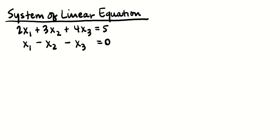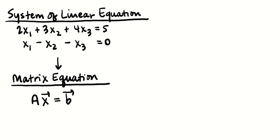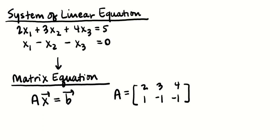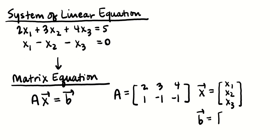I've already shown you in this class how we can transform a system of linear equations into a corresponding matrix Ax equals b, where A is the coefficient matrix — so that would be 2, 1, 3, negative 1, 4, negative 1. X is equal to the solution vector we're looking for: x1, x2, x3 — the combination that makes these equations true. And b is equal to the vector 5, 0. To solve that equation, we augment A with b, row reduce, and draw some conclusions about vector x.